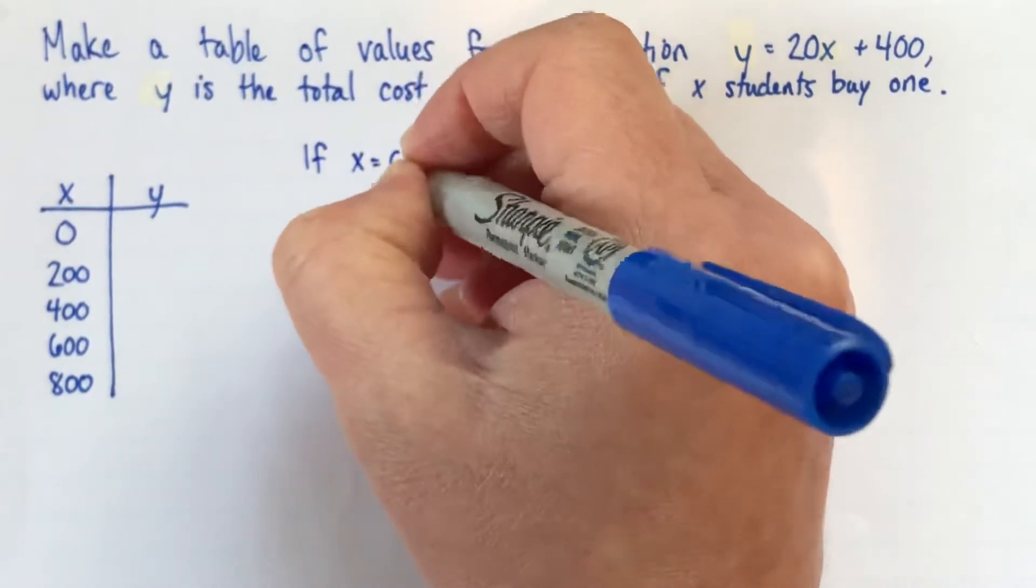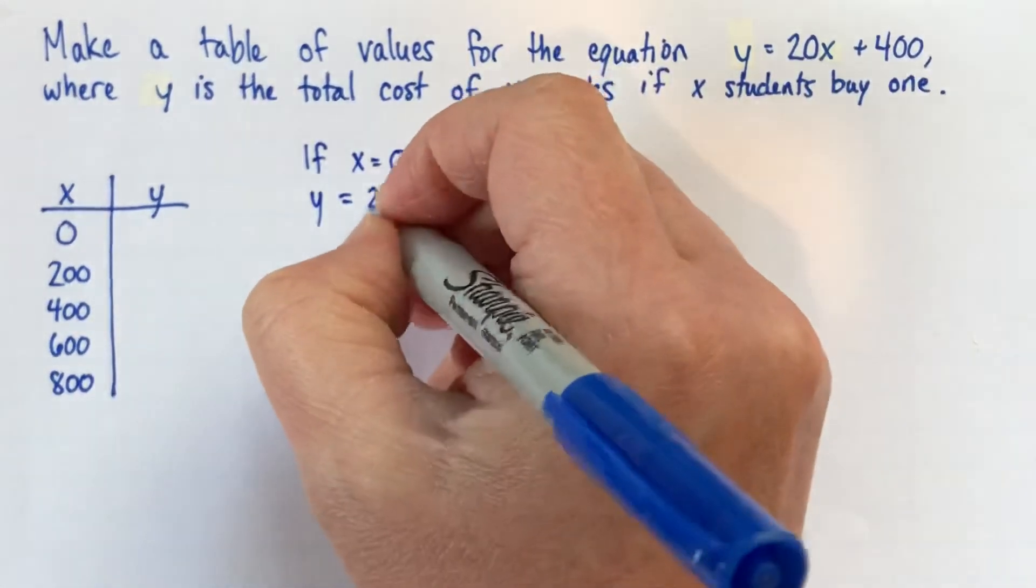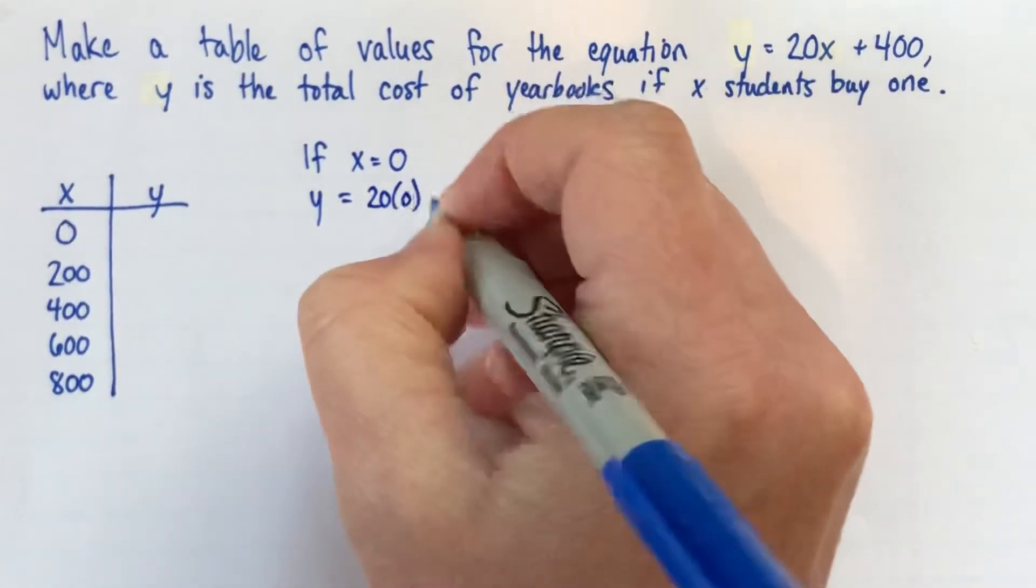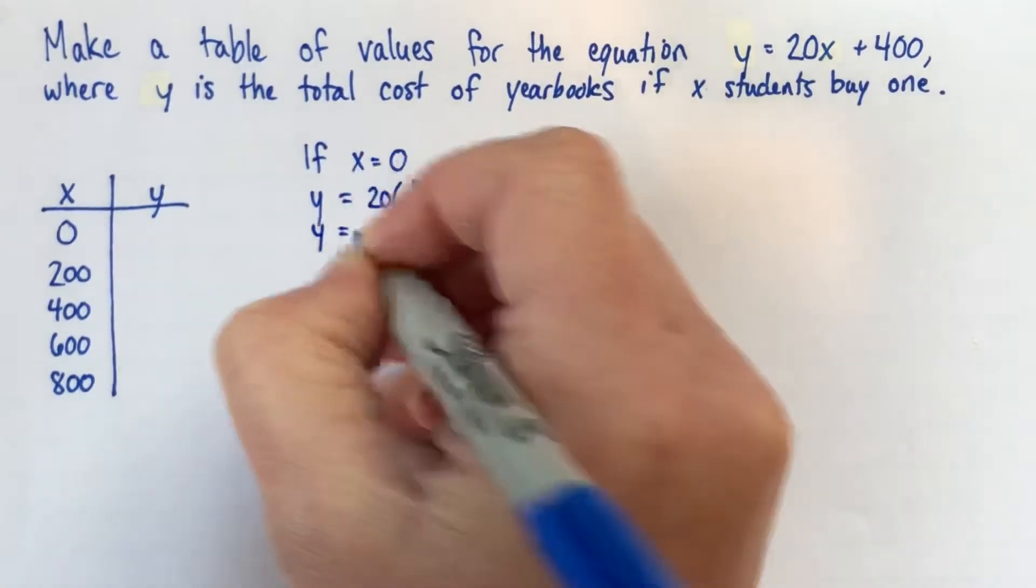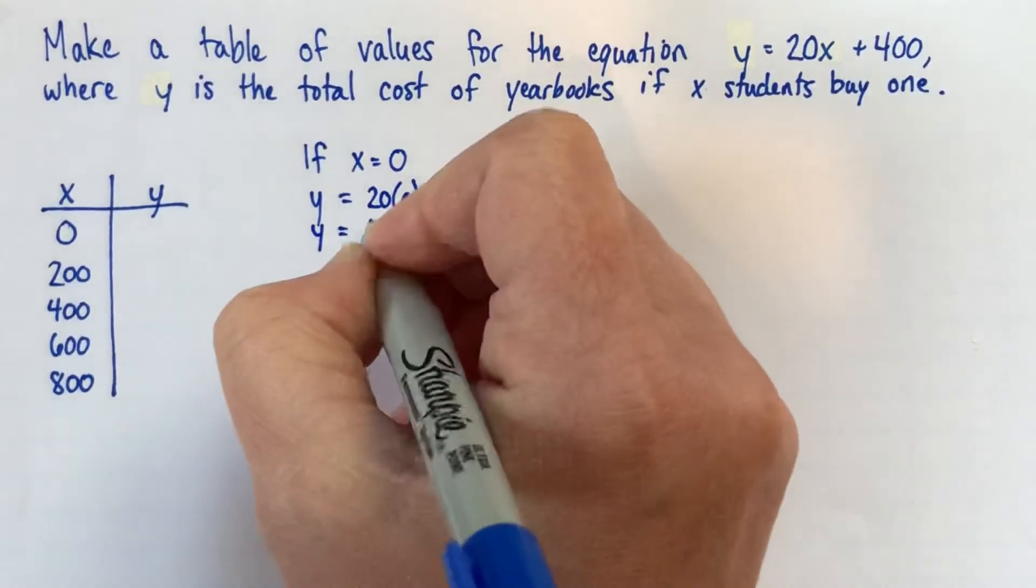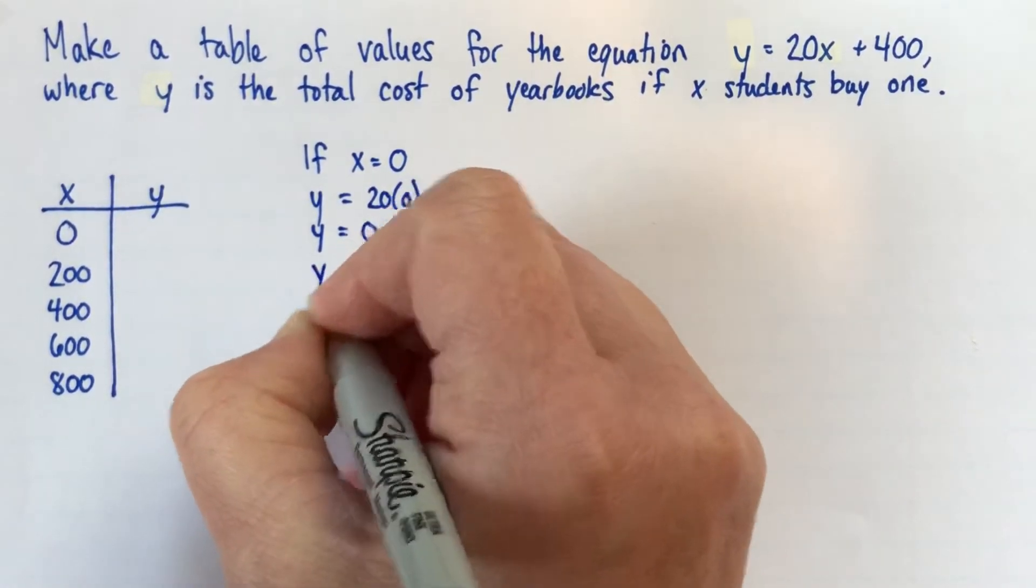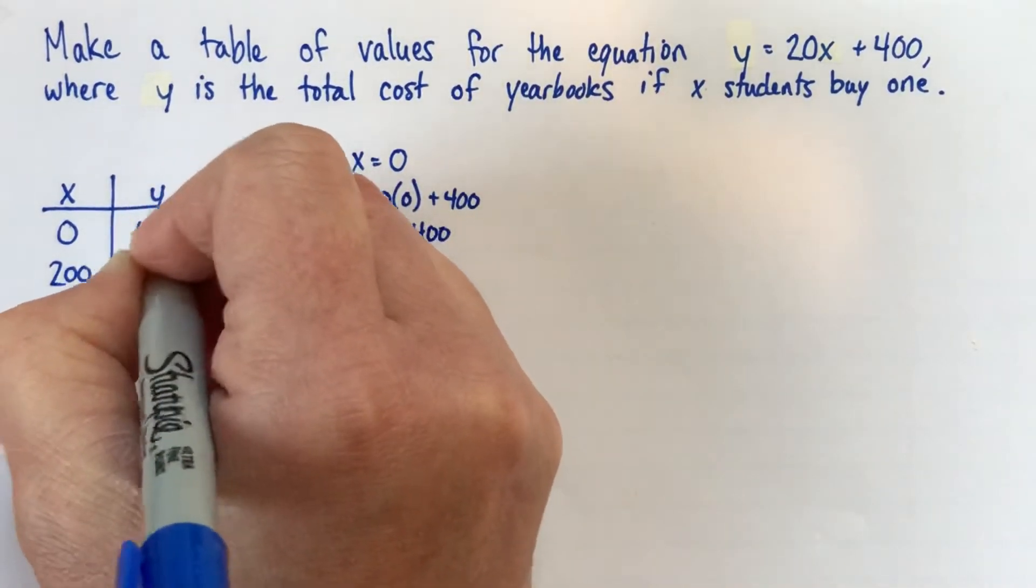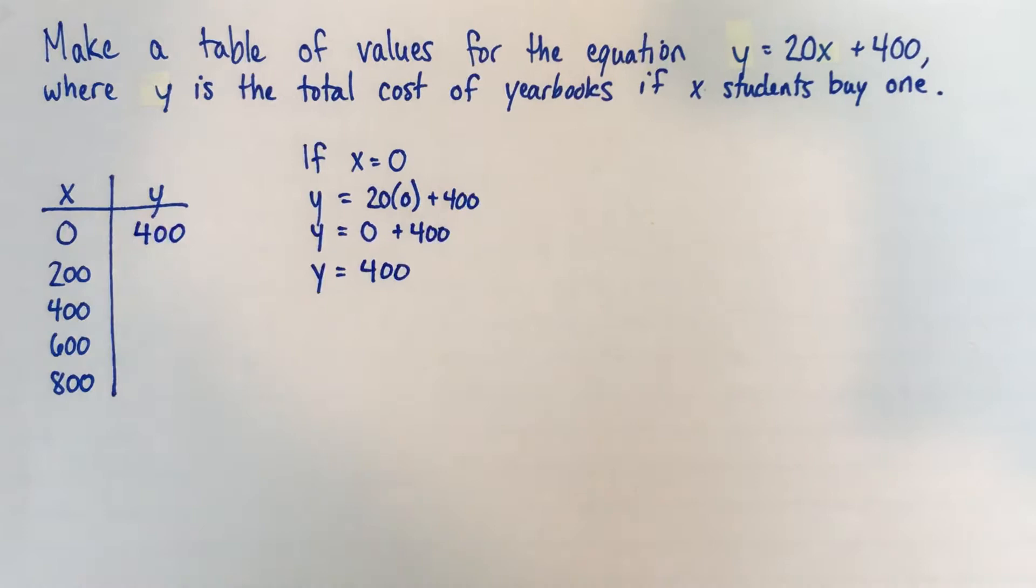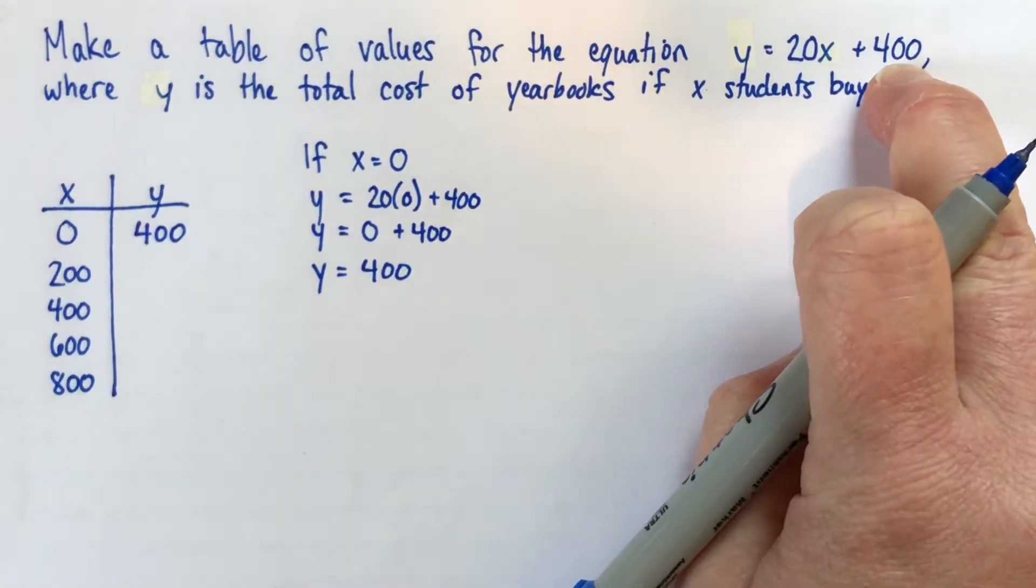If x equals 0, we'll start with. So y is equal to 20 times x, so 20 times 0, plus 400. And I'm going to write these three lines every time. 20 times 0 is 0, plus 400.